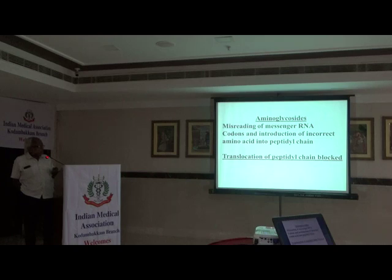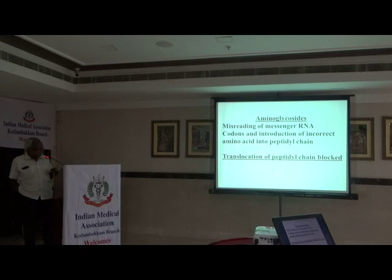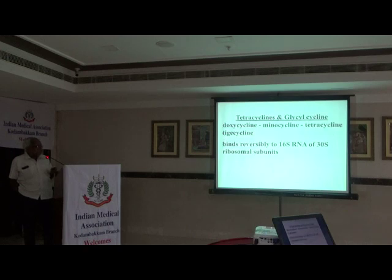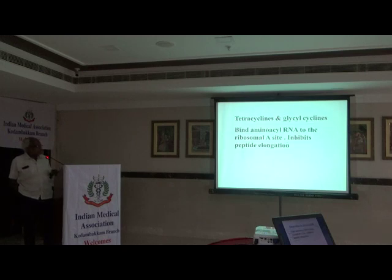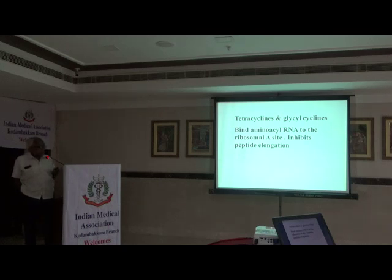Aminoglycosides produce misreading of the messenger RNA codons and incorporation of incorrect amino acids into the peptide chain. Translocation of the peptide chain is blocked. Tetracyclines and glycylcyclines bind irreversibly to the 16S and 30S ribosomal subunits, binding aminoacyl-tRNA to the ribosome in peptide elongation.